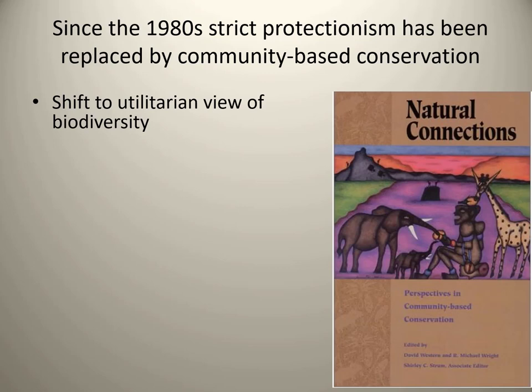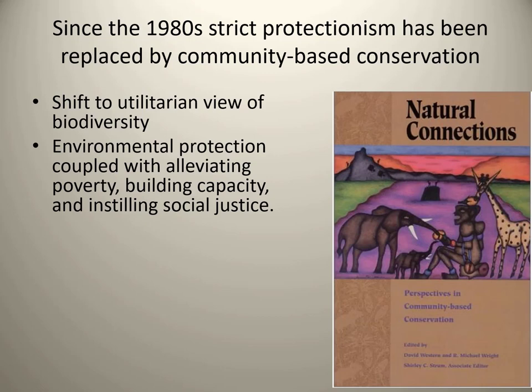Let the people that are part of that environment still use it. In doing so, that provides them an incentive to actually protect and conserve it. If you disenfranchise them, the people living on these boundaries have no reason to really respect them. The emerging consensus is that environmental protection and conservation must be coupled with alleviating poverty, building capacity in local communities, instilling social justice, creating more equality, and reducing poverty. We will never achieve environmental justice unless we also achieve social justice.